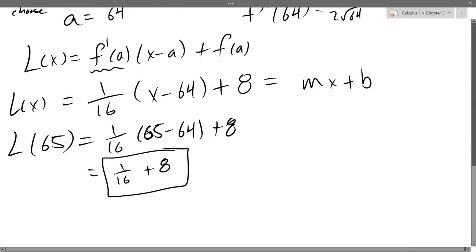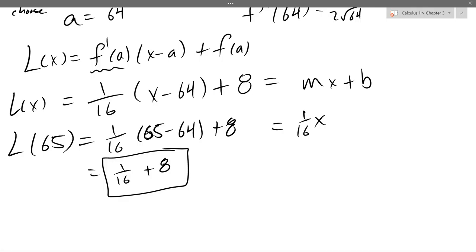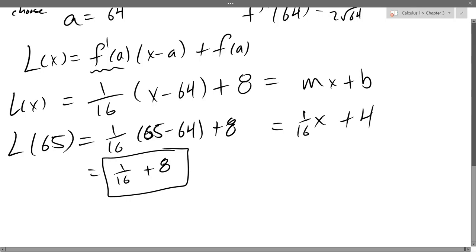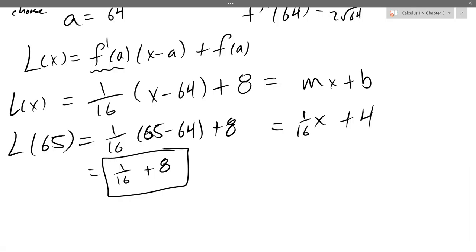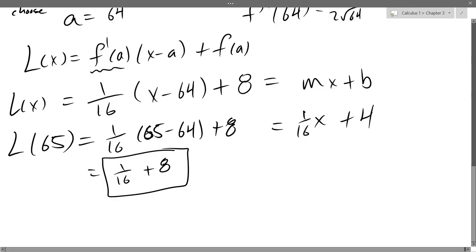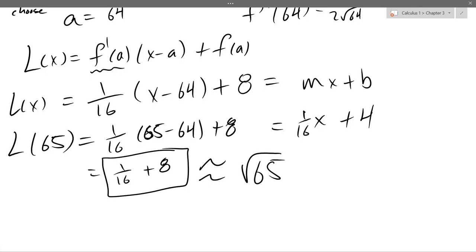So we're going to go and graph these to see why this is pretty good. Now, if I distributed it out, that's easy to do. 1 16th x. 64 divided by 16 is 4. Minus 4 plus 8. Plus 4 like that. But now when I plug in 65, I will have a much better time estimating the original. And that's not exact, right? This is the linearization. This is... What this is not, this is an approximation for the square root of 65. Okay. So the square root of 65 is not 8 and a 16th. Right. It's close, but it's not exact.